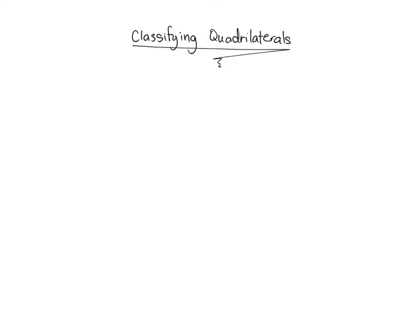In this video, we're going to start looking at how to classify a quadrilateral. Before we start classifying quadrilaterals, we have to know what a quadrilateral is. A quadrilateral is a closed figure with four sides.